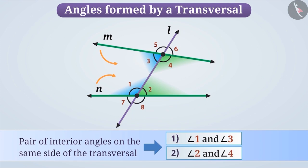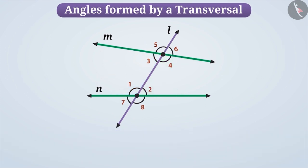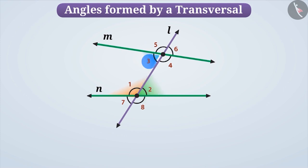In this video, let us learn some more angles formed by the transversal. Observe this diagram. Line L is intersecting lines M and N at different points, hence it is called a transversal. Since angle 1, angle 2, angle 3, and angle 4 are in between the lines M and N, they are interior angles.